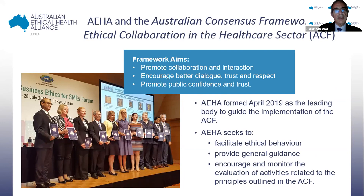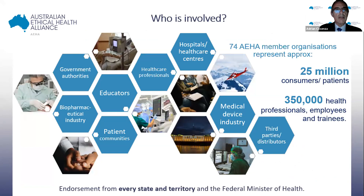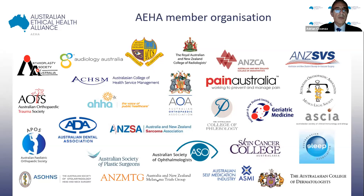The body was formed in April 2019 as the leading body to guide the implementation of the Australian consensus framework. The Alliance seeks to facilitate ethical behaviour, provide general guidance, and encourage and monitor the evaluation of activities related to the principles outlined in the consensus framework. From a standing start of four, there are now 74 members of this Alliance, representing 25 million consumers and patients, over 350,000 health professionals, employees and trainees. It covers all sectors within health, ranging from government, regulators — with the full endorsement of all state health ministers and the federal minister of health — through to pharmaceutical and medical device industry.